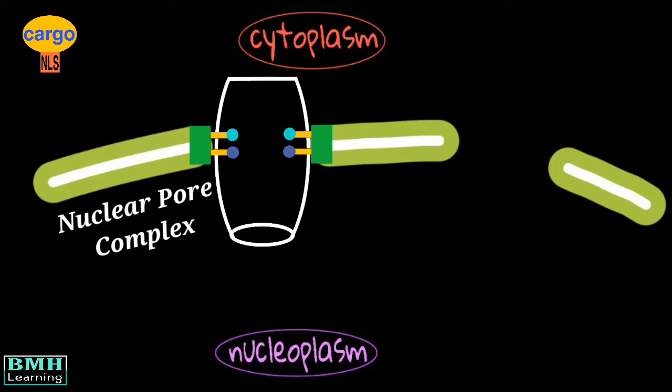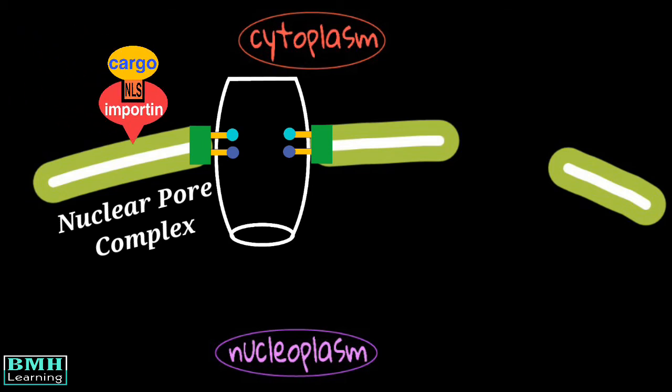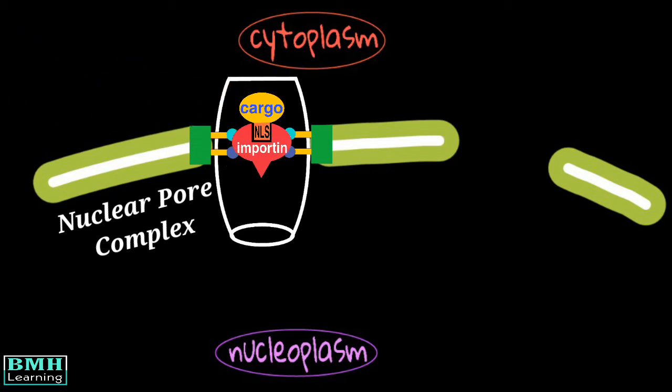For the selective import of the protein, first a free nuclear transport receptor known as importin binds to the NLS of the cargo. Then the importin directs the cargo to the nuclear pore complex.